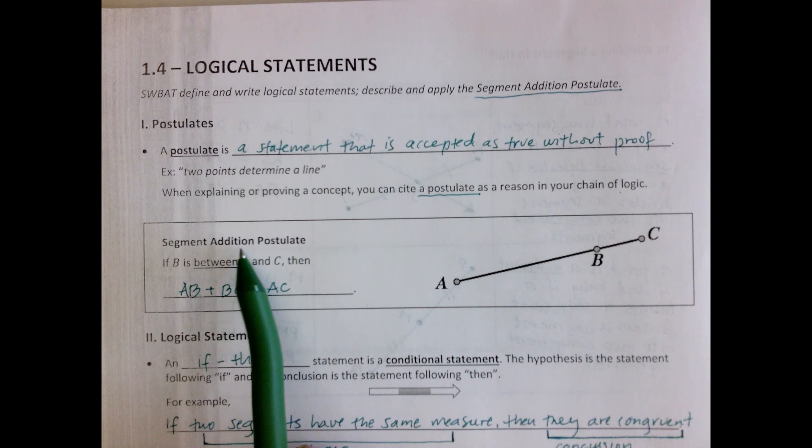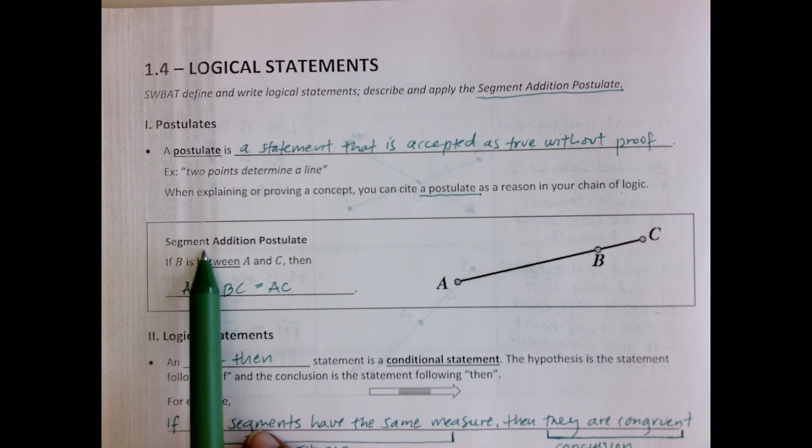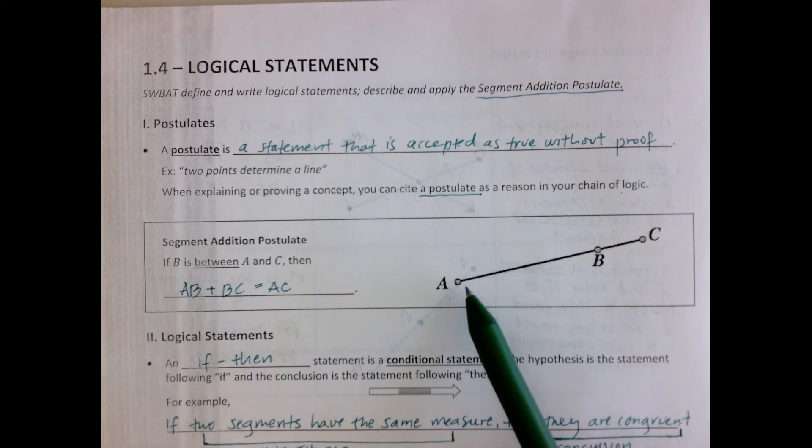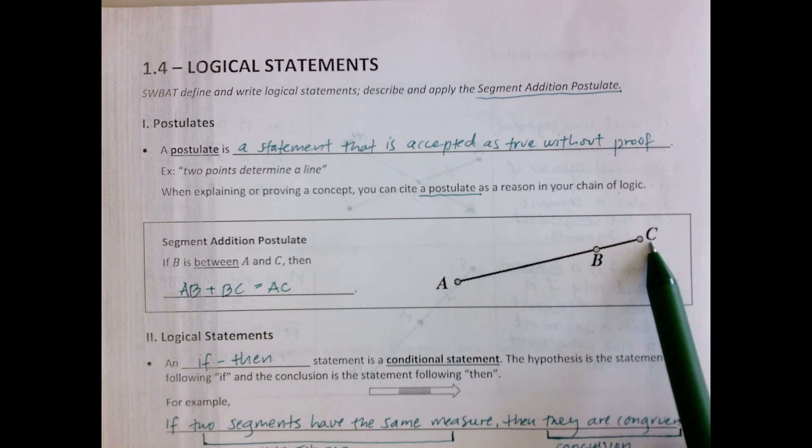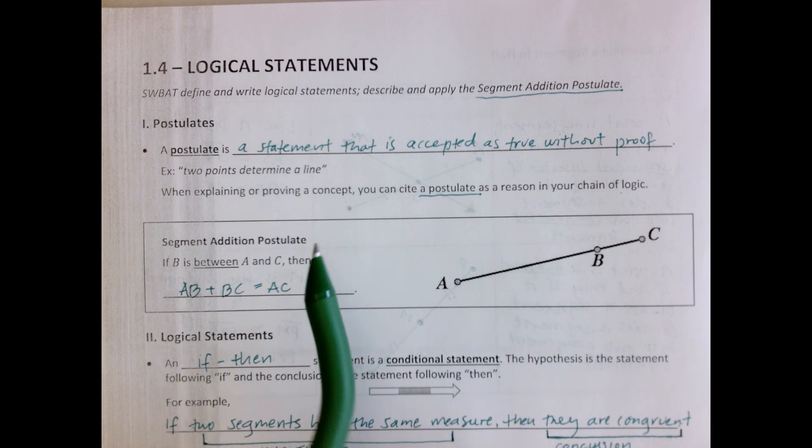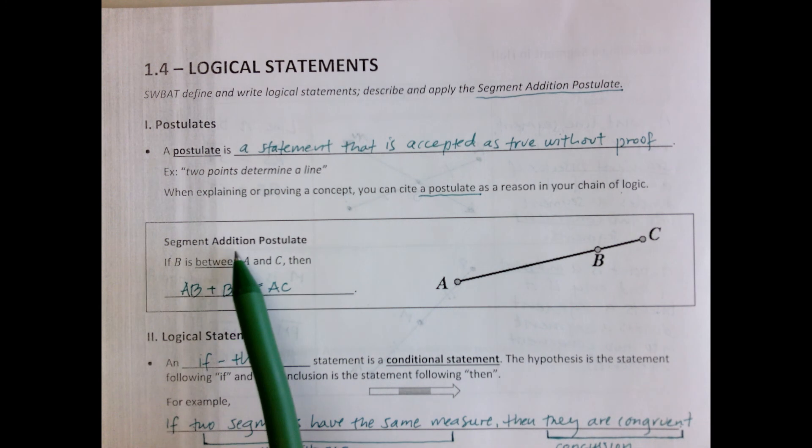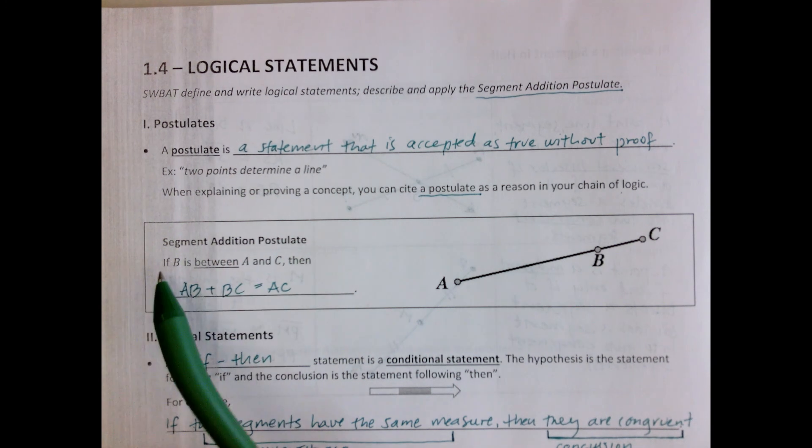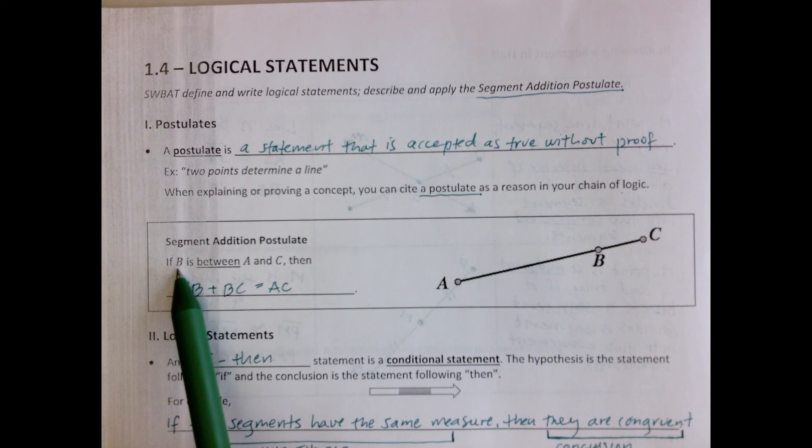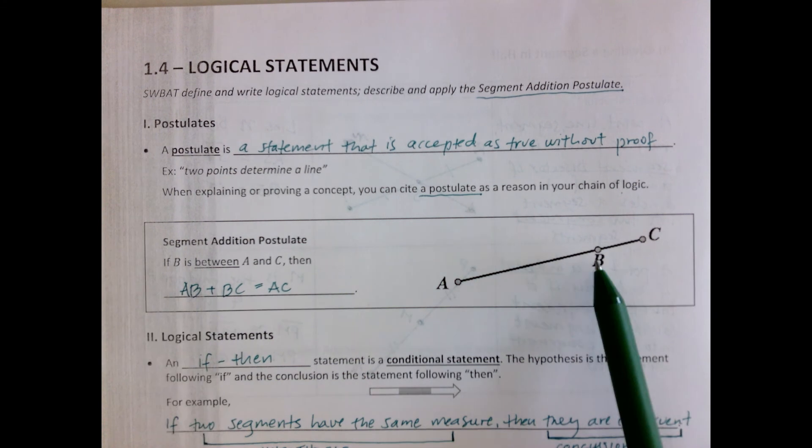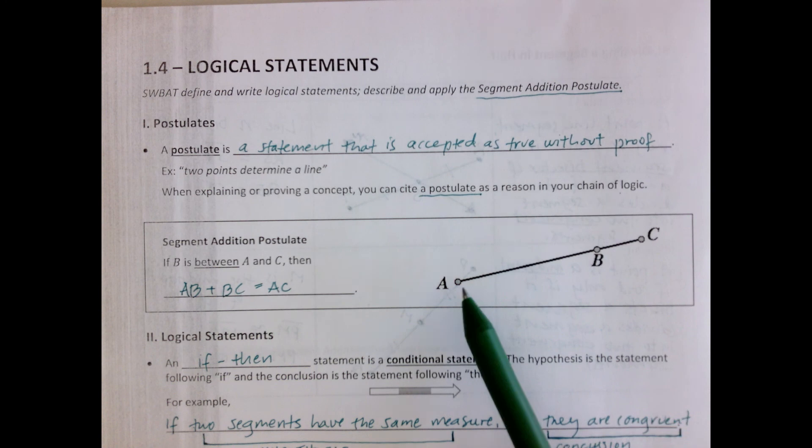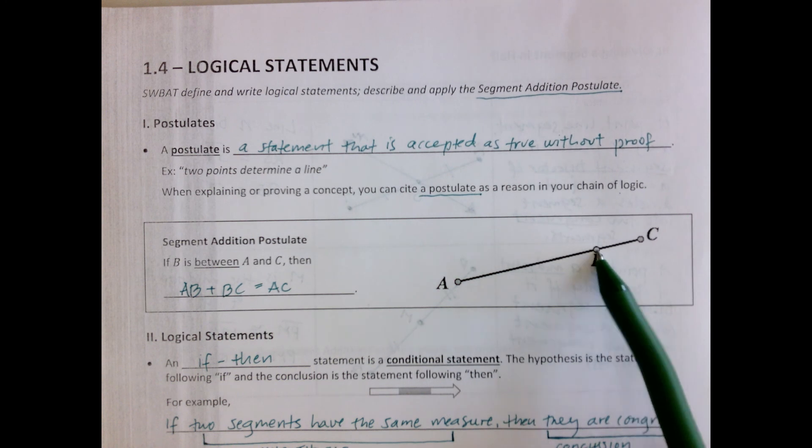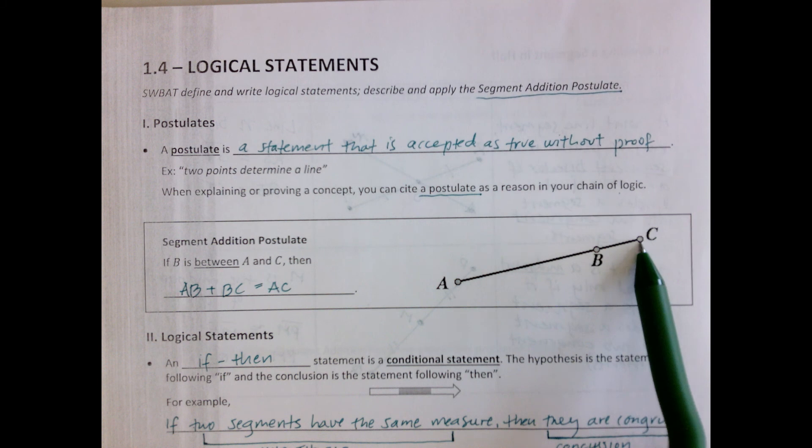So the segment addition postulate. We know what a segment is. It is a portion of a line that has a starting point and an ending point, or two end points. And the segment addition postulate states that if point B falls between points A and C, then if we take the length of AB and add it to the length of BC, we'll have all of AC.